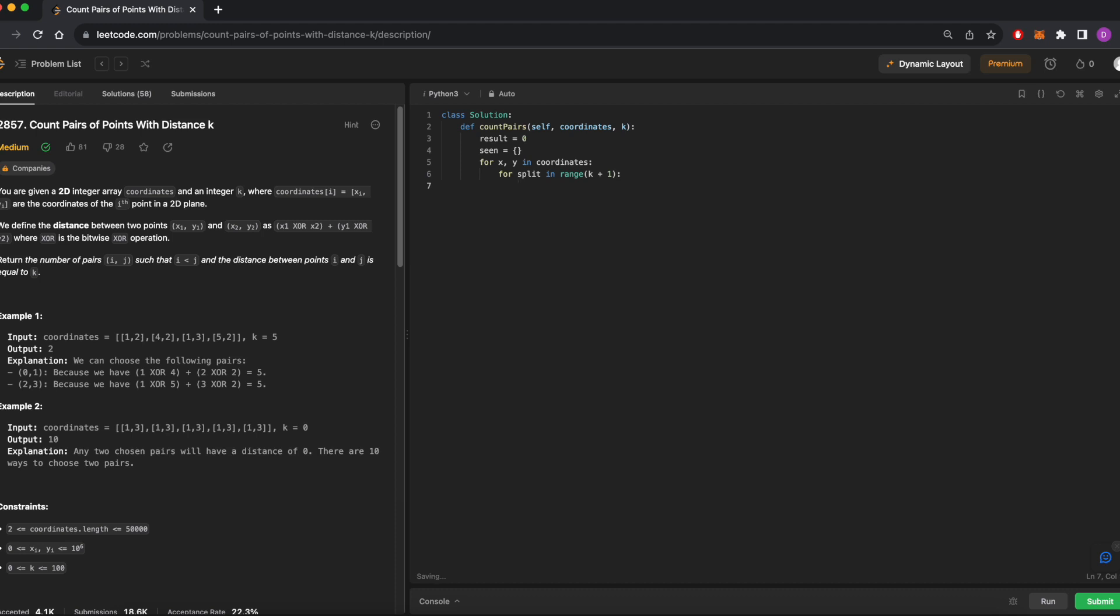Then, for each possible split, let's now calculate the complement for x and y that we discussed earlier. The complement for x will be x xor split, and the complement for y will be y xor k minus split. We'll then add the number of times this complement has occurred in the array to our running total. Finally, we'll store the current coordinate in our dictionary and increment the count for this coordinate since the dictionary records the number of times each coordinate has occurred.